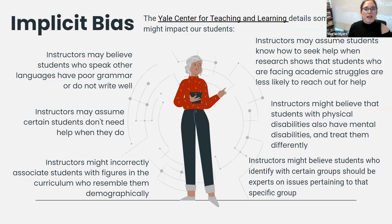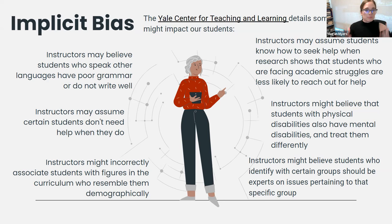What is implicit bias? What are some ways that it can affect our students and our teaching? We're going to move on to looking at our content — focusing on content first and then facilitation — in order to identify bias and work against it.